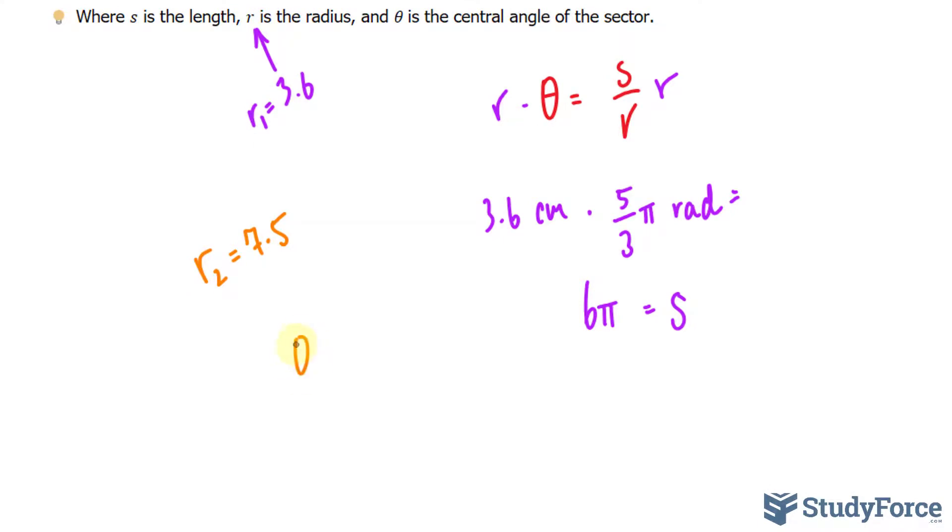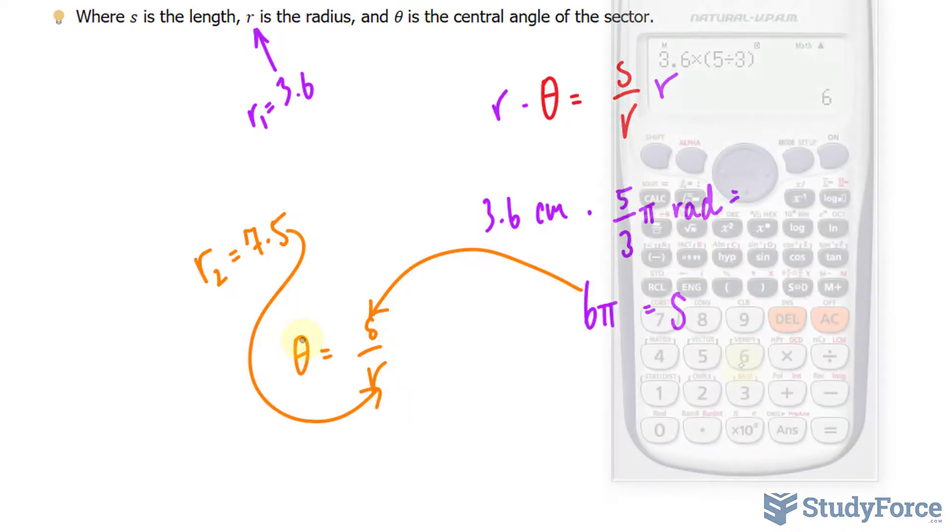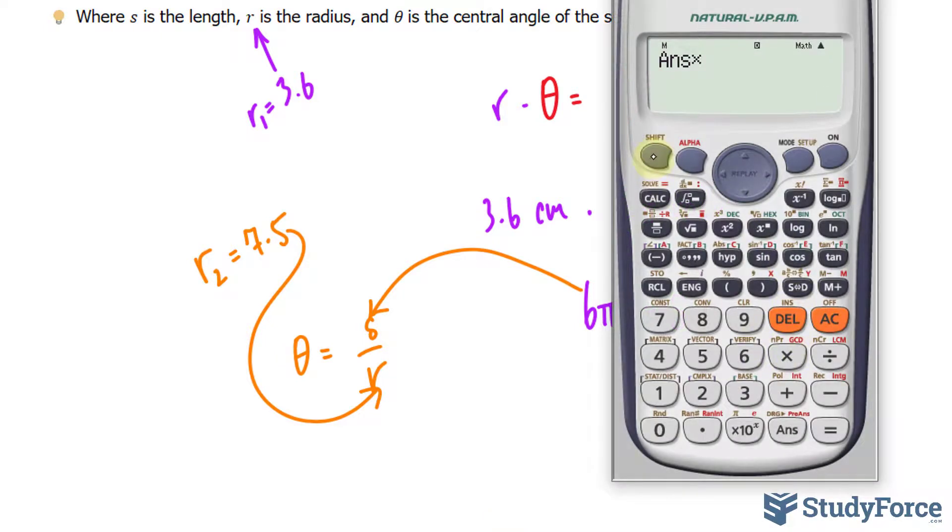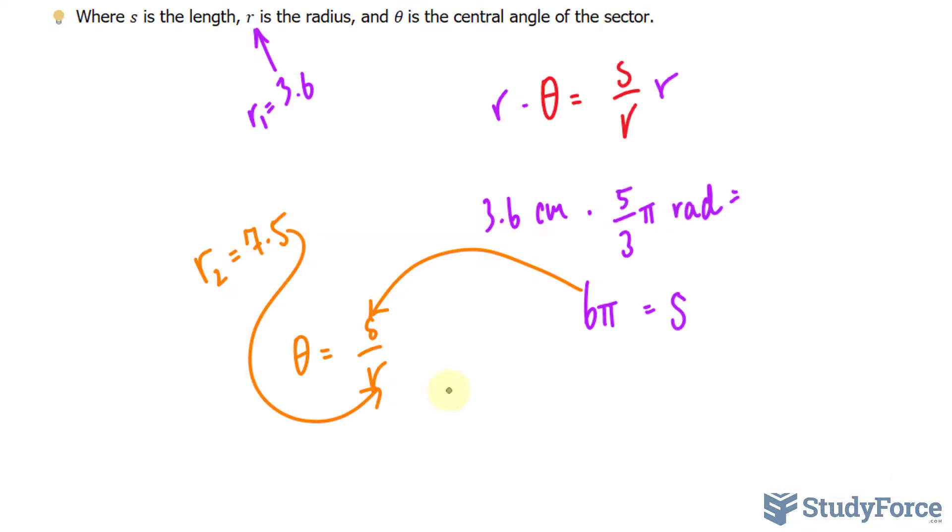So the formula again was theta is equal to S over R. This is shared, as mentioned. That's going to go there. And by dividing these two numbers out, we will end up with theta, which is in radians, and then we can convert that back into degrees. 6 times pi, now we have 6 pi on our screen, divided by 7.5. And that is 4 over 5 pi. So theta is 4 over 5 pi radians.